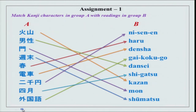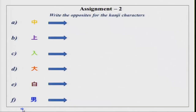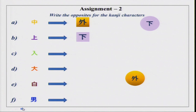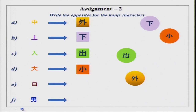Keep looking at these characters as we are doing Japanese in a non-Japanese environment. It is better to see them again and again — the visual is strong, it stays with you and you feel more comfortable. Now, write the opposites for the Kanji characters. The first one is Soto, which is the opposite for Naka. Then we have Ue and Shita, Hairu and Deru, then Ooki and Chisai, Shiroi, Kuroi, and Otoko and Onna.